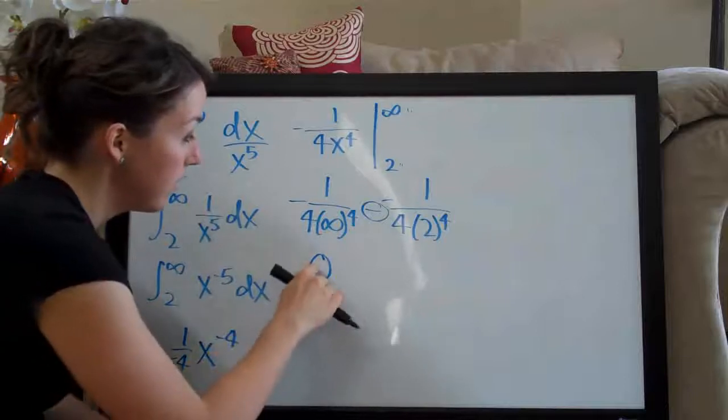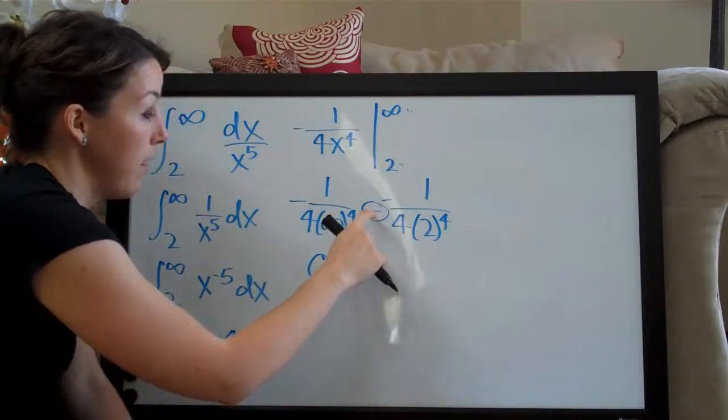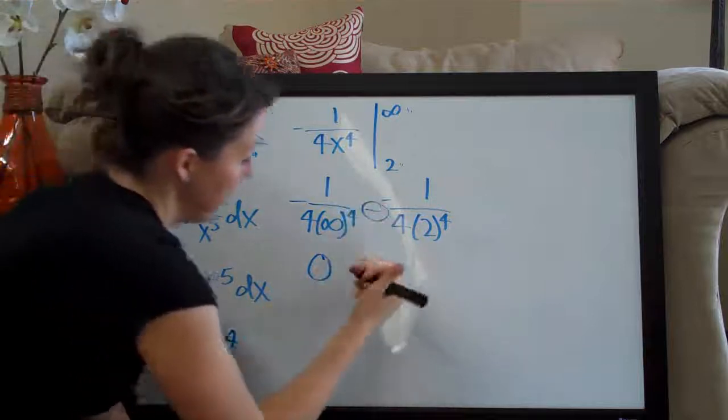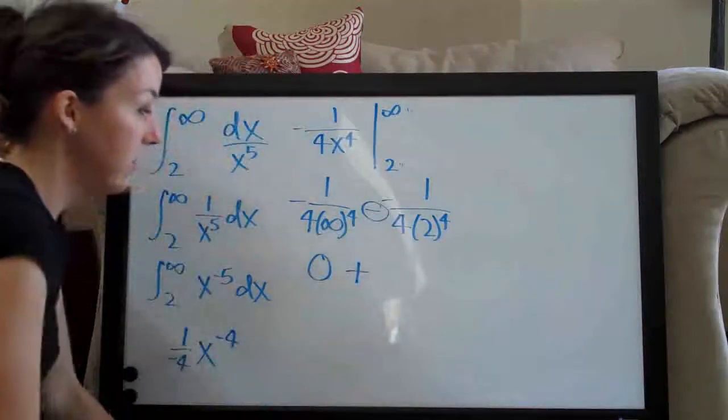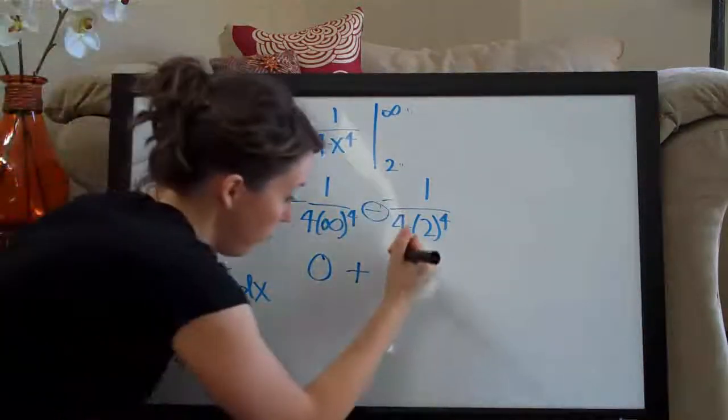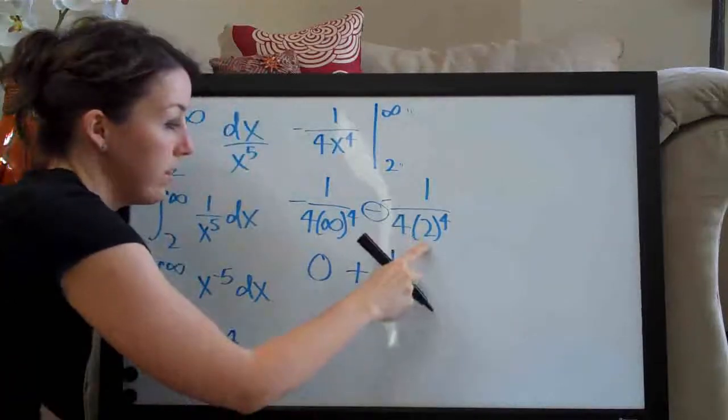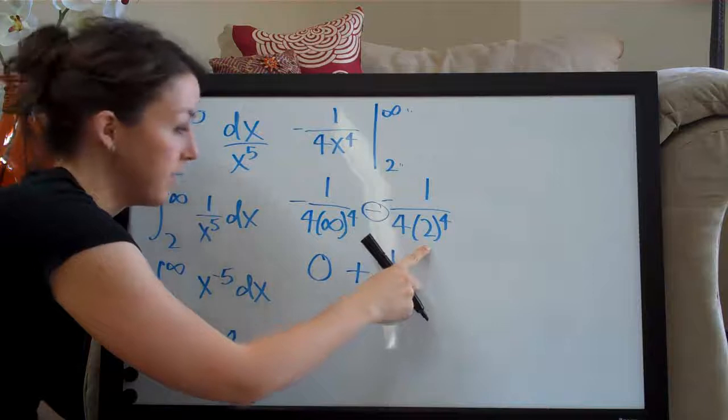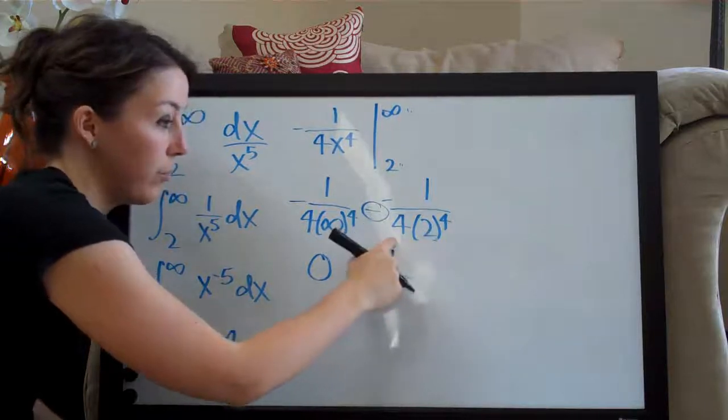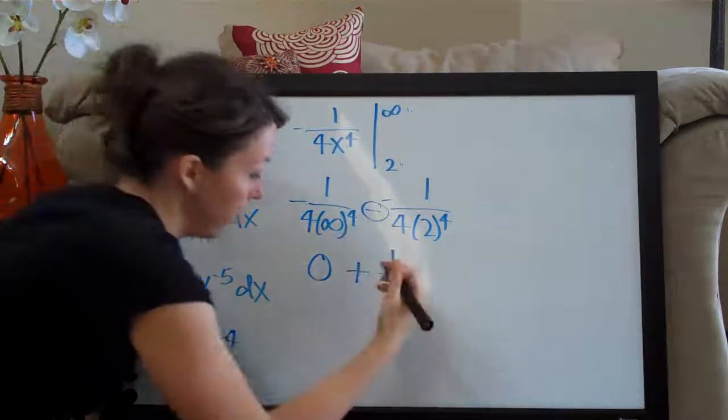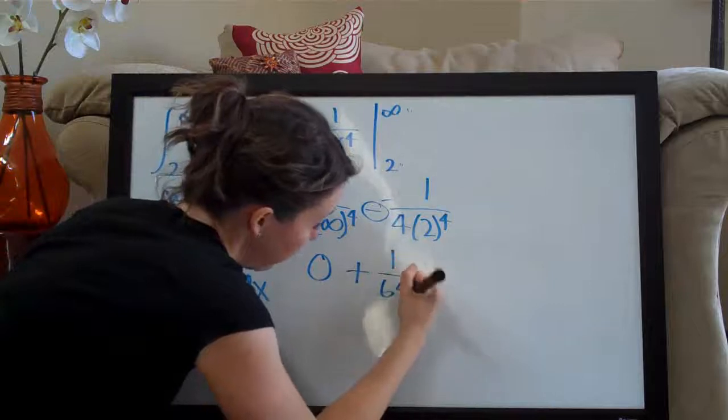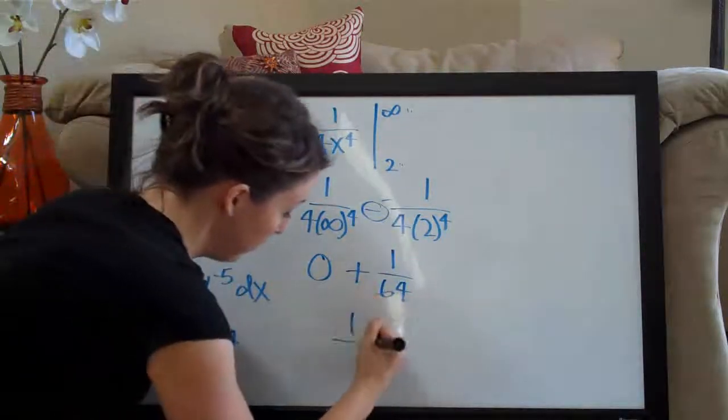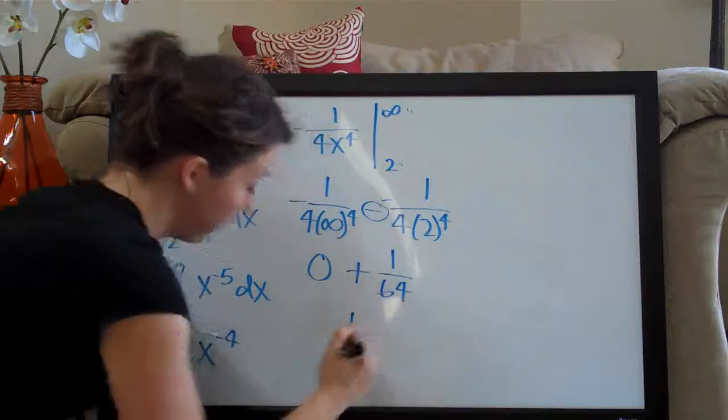So this ends up being zero. And then of course, since you have a minus a negative, that becomes a plus. So you have plus and then one over two to the fourth is four, eight, sixteen. So sixteen times four is sixty-four. So one over sixty-four. And the final answer is actually one over sixty-four.